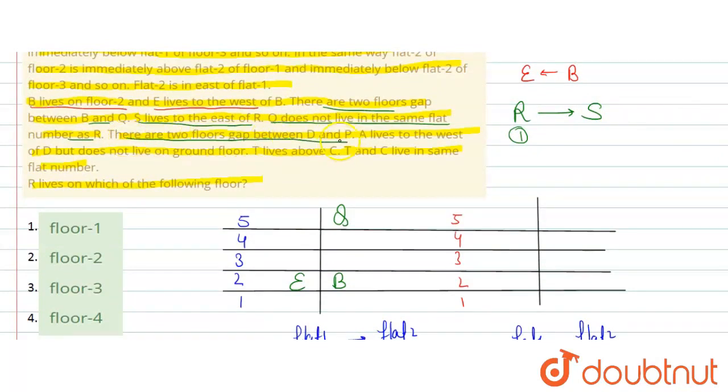Then given is there are two floors gap between D and P. And A lives to the west of D. So, A is west of D but doesn't live on ground floor. So, here A or D will not come. Because A is west of D, so it won't come here. Because of this, we confirm that A and D are above. So, here we have A and here we have D. Given for A is west of D, so it comes here.